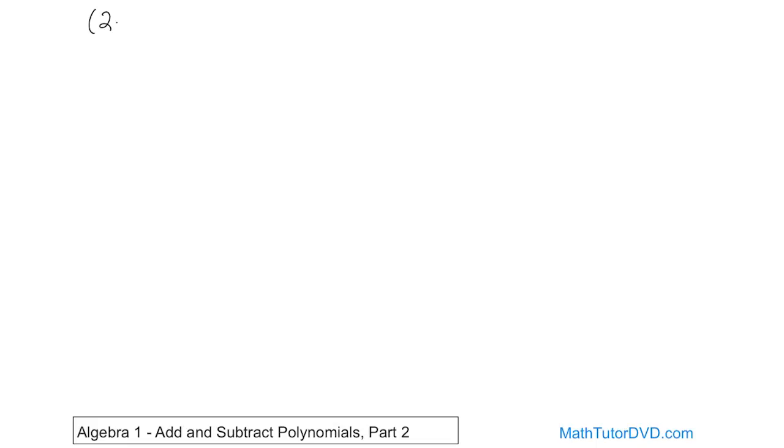So if we have, for instance, 2x squared minus 3x minus 4, and then we're going to add to that another polynomial, 3x squared plus 4x minus 6.